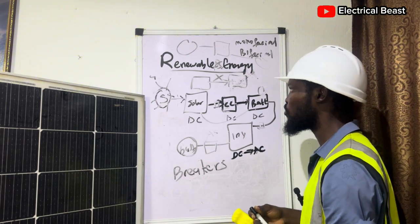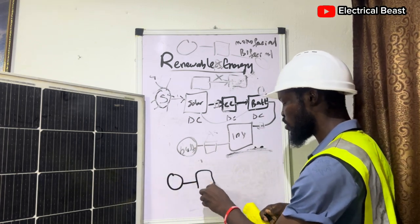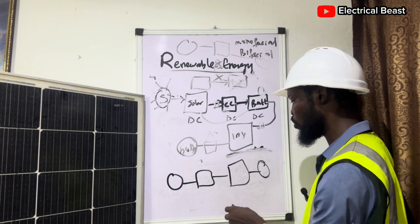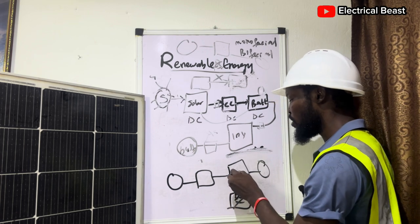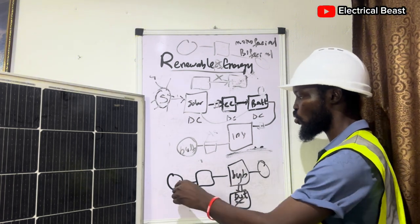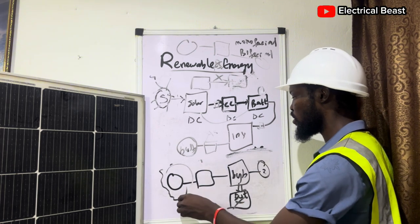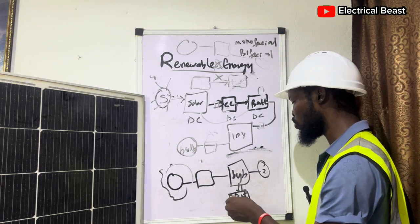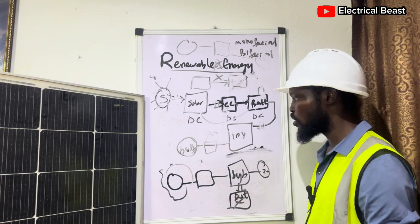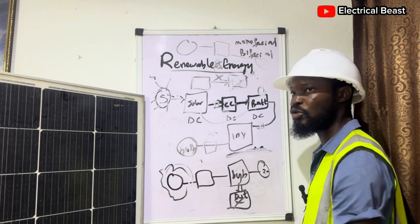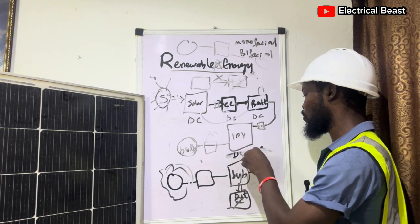Some inverters can convert energy from the sun directly to AC — hybrid inverters can work without a battery. The flow is: sun → solar panels → inverter → load, even with no battery present. However, you basically need a battery bank to store energy so that at night or on low-sunlight days, the battery storage kicks in and the inverter converts DC to AC for your load.